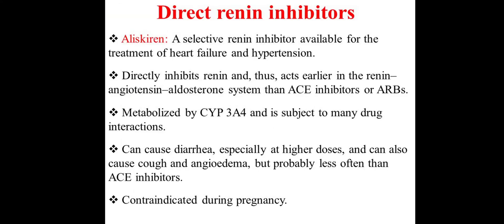Next are direct renin inhibitors. The example is aliskiren, a selective renin inhibitor. Renin is a proteolytic enzyme, and by directly inhibiting it, we can completely inhibit the RAAS pathway, which is useful in treating both hypertension and heart failure.